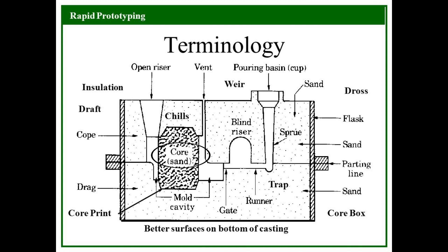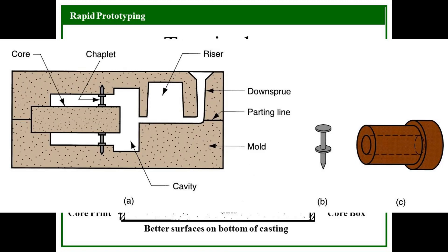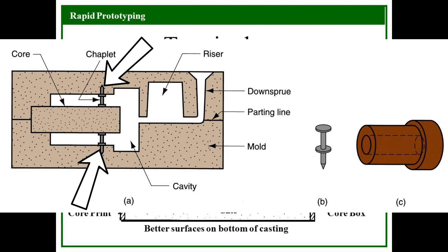Next is the core. The core is used to cast hollow cavities. It is also a sand structure and is placed at the right place in the mold cavity where the hollow part is to be created. The metal poured into the mold cavity does not fill the part at which the core is placed, thus forming a hollow cavity. Moving ahead are the chaplets. These are supporting components of the core. These are used to support and hold the core in the mold cavity. These protect the core from various forces encountered in casting.